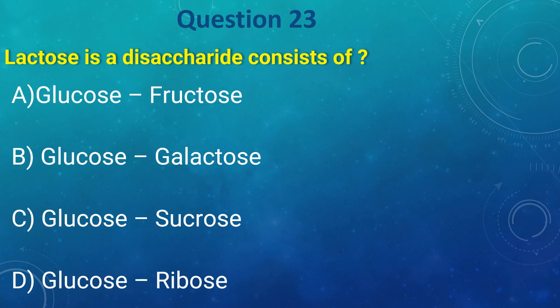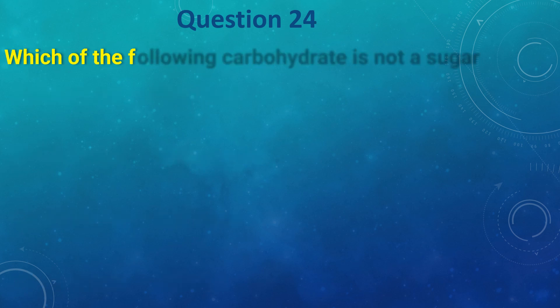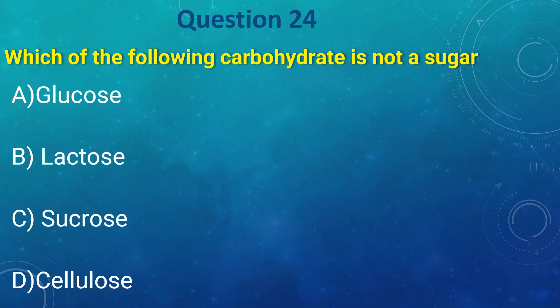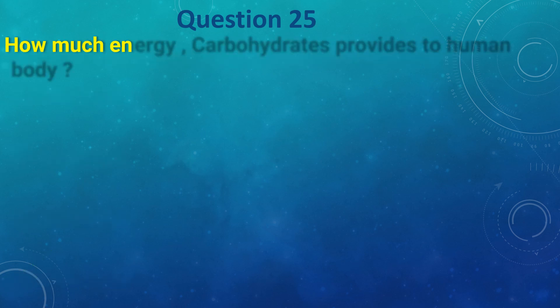Lactose is a disaccharide consisting of: a) glucose and fructose, b) glucose and galactose, c) glucose and sucrose, d) glucose and fiber. The answer is glucose and galactose. Which of the following carbohydrates is not a sugar: a) glucose, b) lactose, c) sucrose, d) cellulose. The answer is d) cellulose.